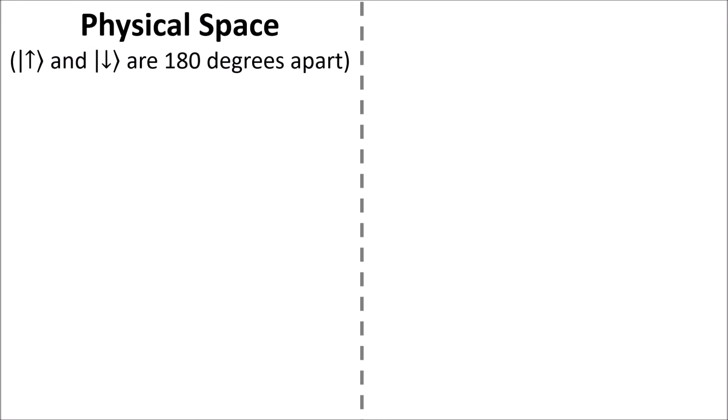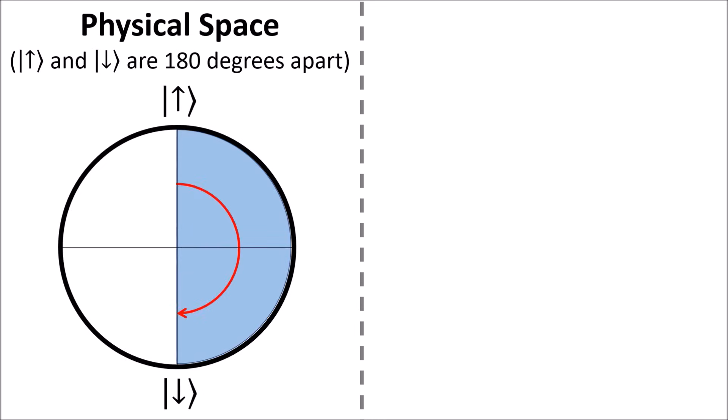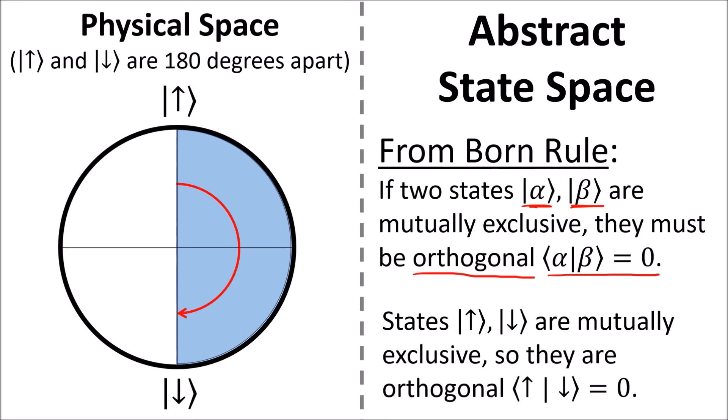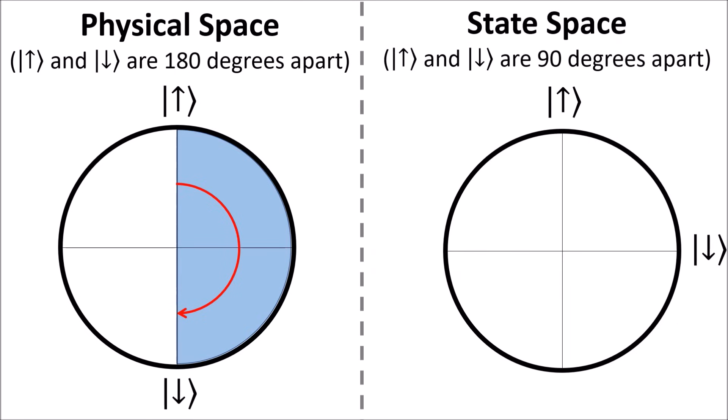In physical space, up and down point in opposite directions, 180 degrees apart. But the quantum spin up and spin down states of a particle don't live in physical space. Instead, they live in an abstract state space. The rules of quantum mechanics tell us that when two states are mutually exclusive, they must be orthogonal. The spin up and spin down states of a particle are mutually exclusive, and so they are orthogonal, separated by 90 degrees.